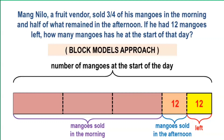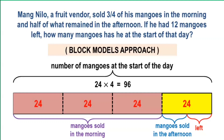Adding twelve plus twelve, we get twenty-four. And this represents the one-fourth of the original number of mangoes. It follows that each of the other equal parts is also equal to twenty-four. Hence, in order to get the original number of mangoes, we just multiply twenty-four by four, which is equal to ninety-six.